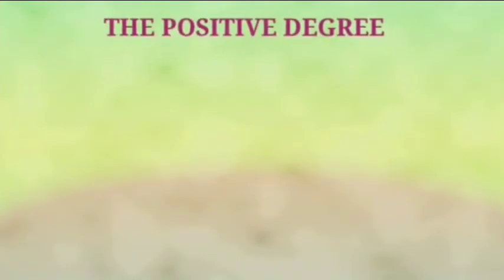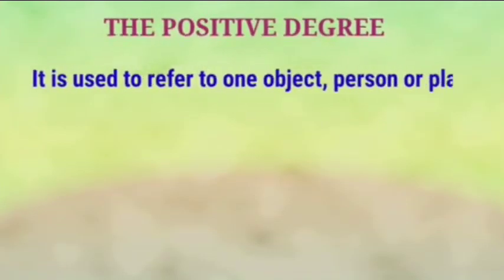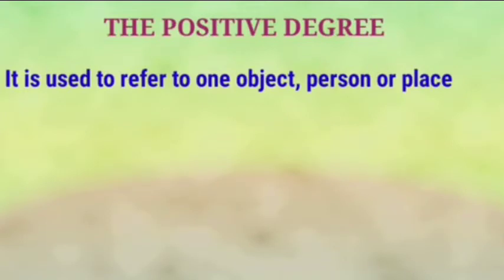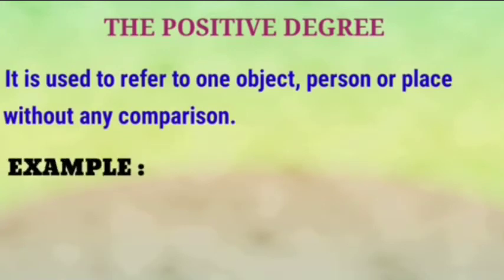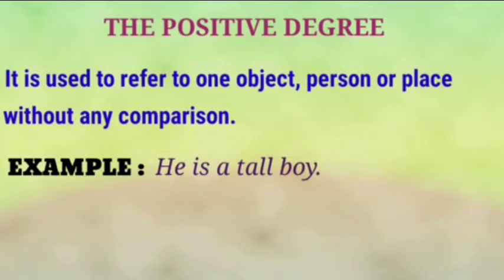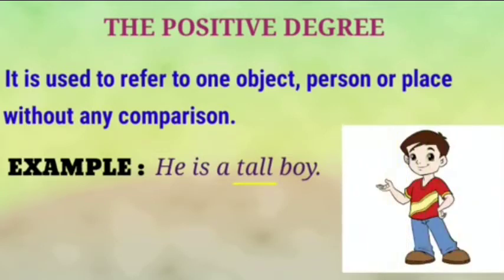Let us discuss the positive degree first. It is used to refer to one object, person, or place without any comparison. For example, 'He is a tall boy.' In this sentence, 'tall' is the positive degree of the adjective because it refers to one object and has no comparison with another object.